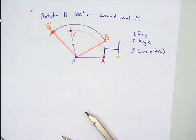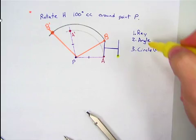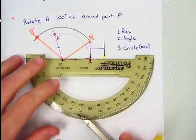So now we might want to rotate this point right here. So we just follow these three steps. Ray, angle, circle. So here's my ray.